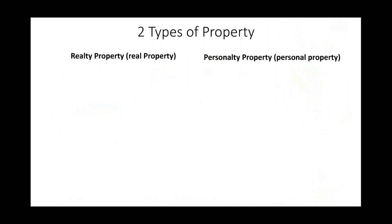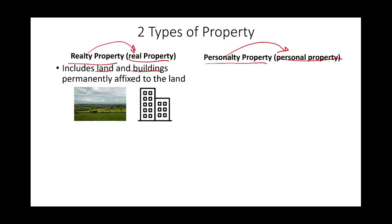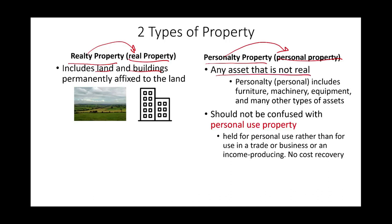There's an important distinction for tax depreciation: we differentiate between two types of property — real property and personal property. Real property includes land, buildings, and anything permanently affixed to the land, like a warehouse or office building — these are not movable. Personal property is anything that's not real property: furniture, machinery, equipment, vehicles, computers, and so on.